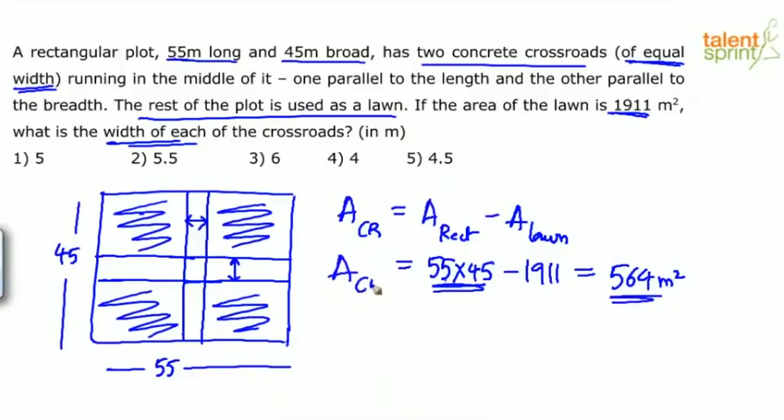Now, let us assume the width of the crossroads is x. What will be the area of this horizontal crossroads? Length is 55, it is parallel to the length, so length is 55 and width is x, so we can say 55x. Plus what will be the area of the vertical crossroads? This time the length is 45 and the width is x only, breadth is x, so 45x.